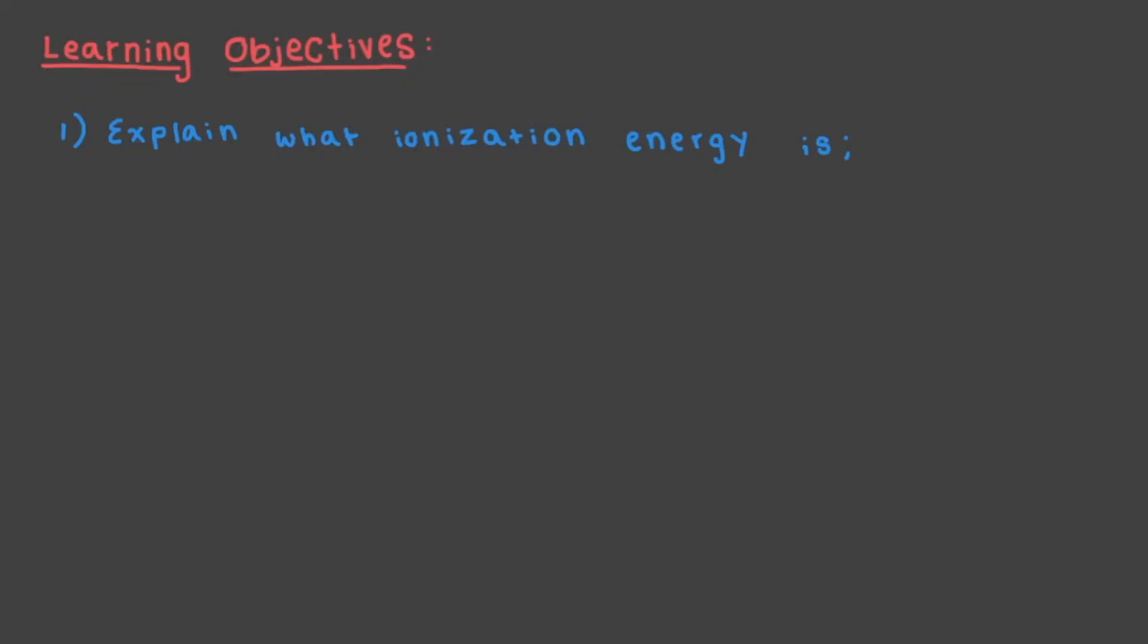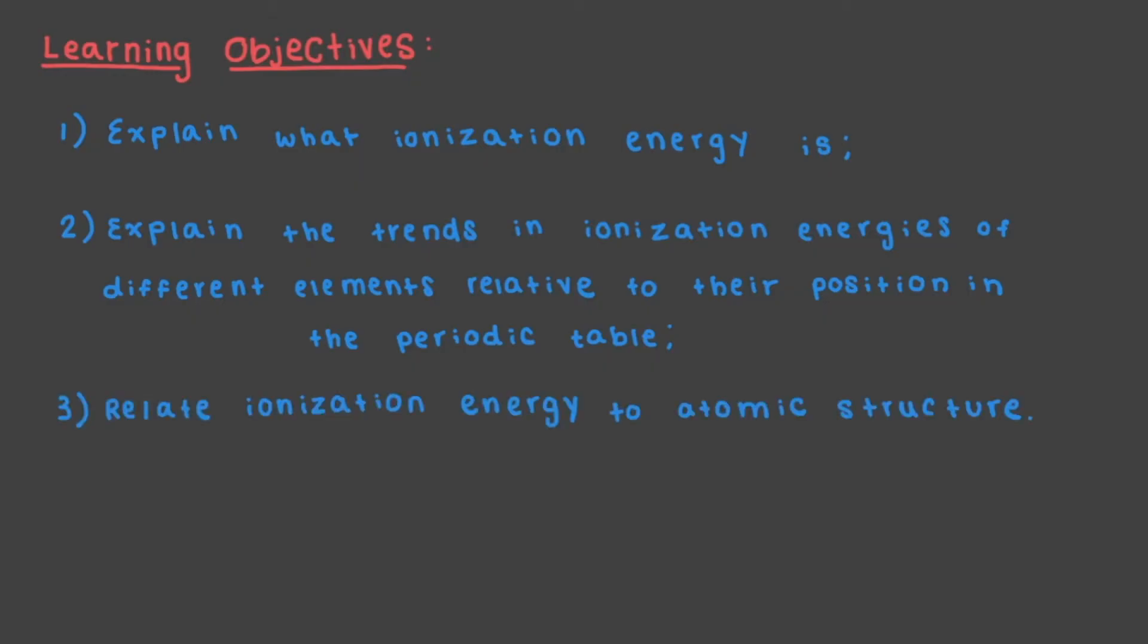In this video, we are going to be looking at the process of ionization, removing an electron from an atom, and the energy associated with that process. By the end of this video, you should be able to explain what ionization energy is, explain the trends in ionization energies of different elements relative to their position in the periodic table, and relate ionization energy to atomic structure.